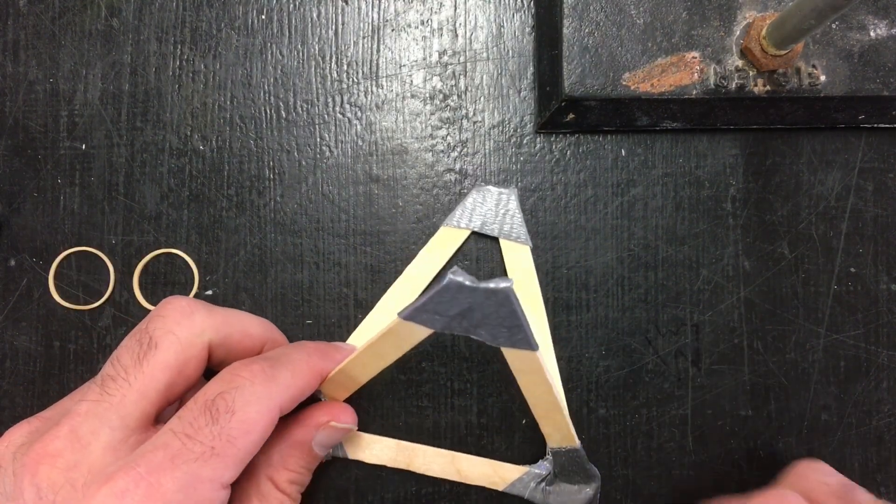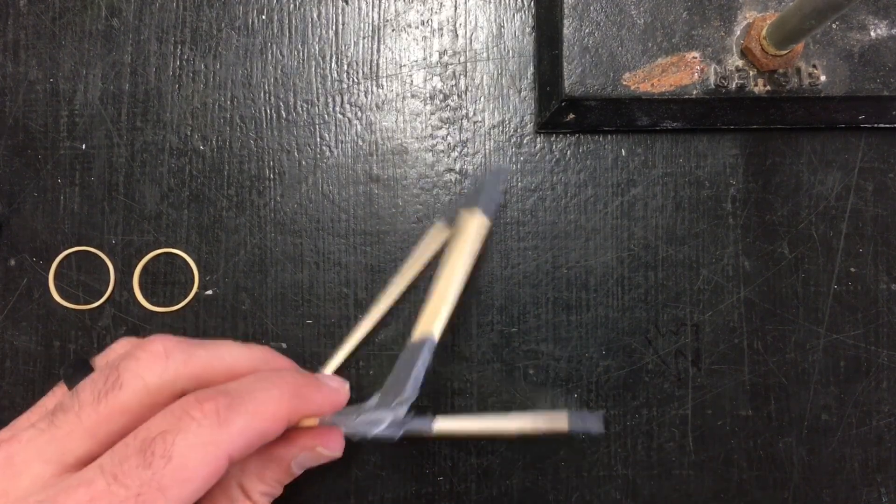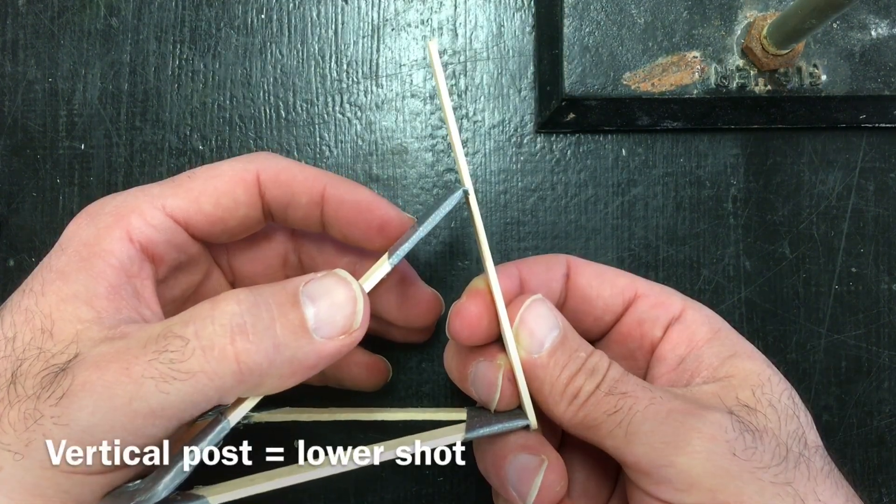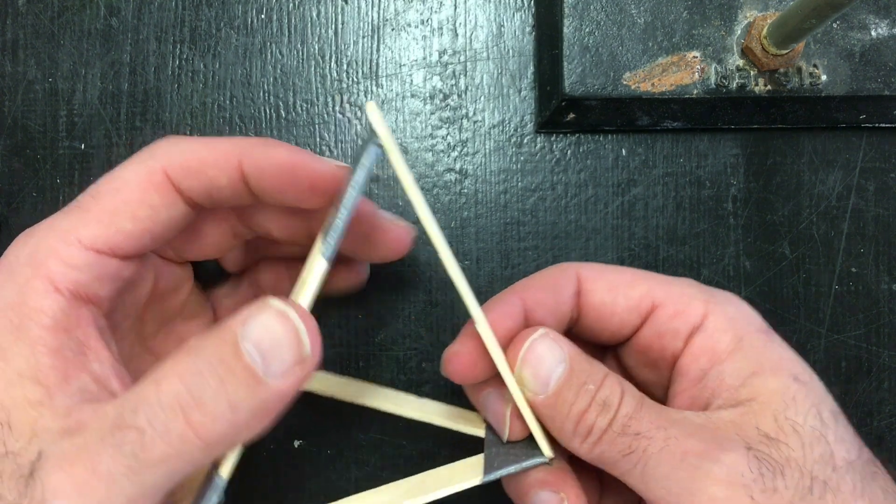So the next part we're going to want to add is a front post. So if I turn this catapult on its side, you should have a shape that looks sort of like this. Let's put these into place.